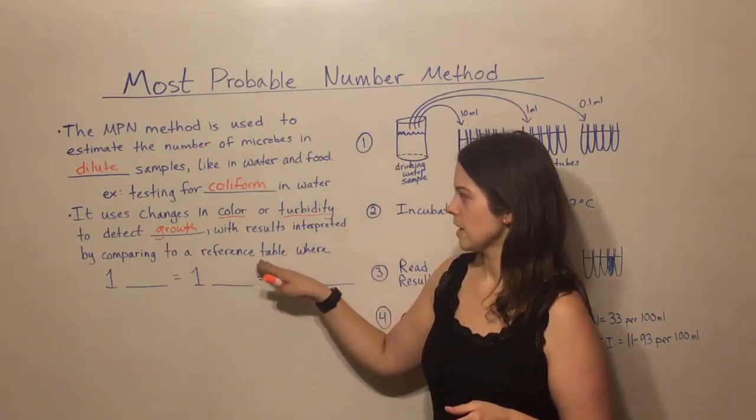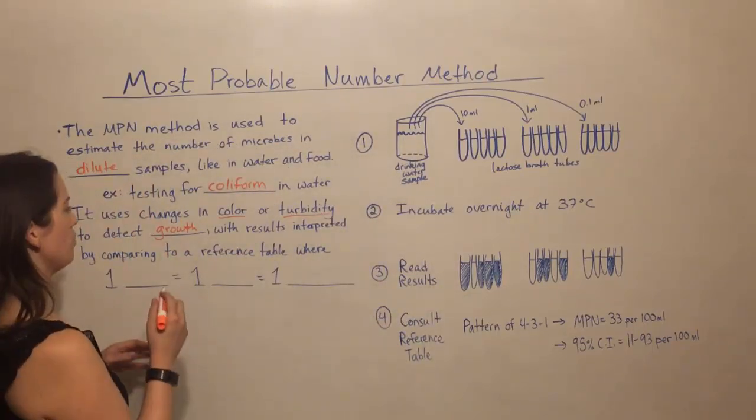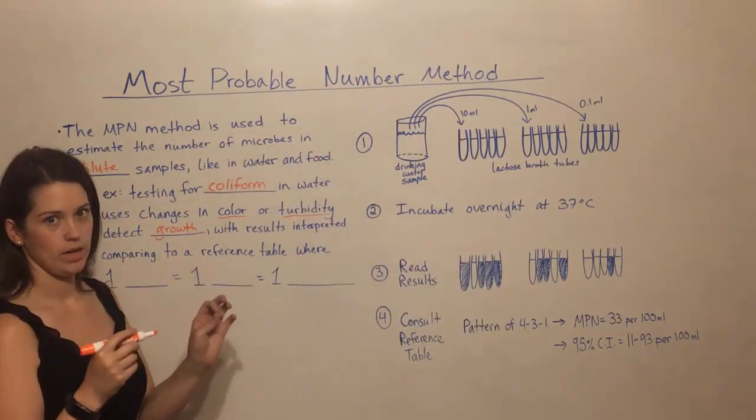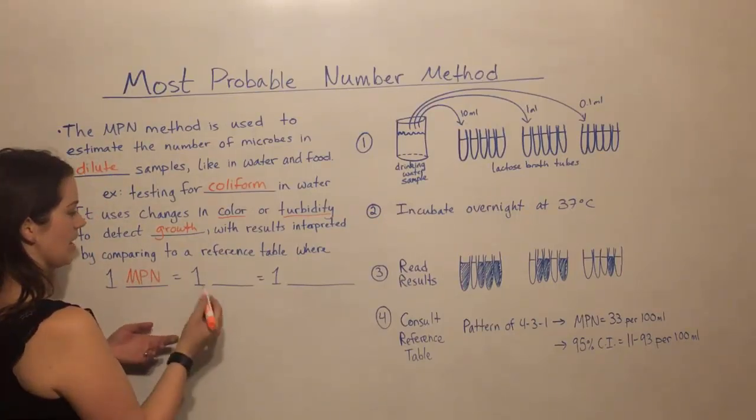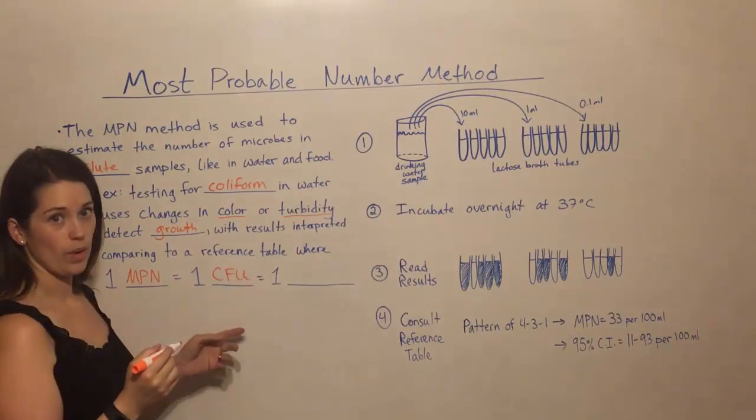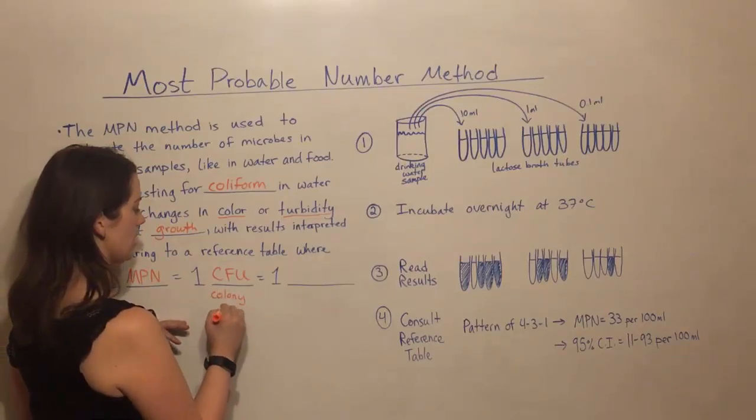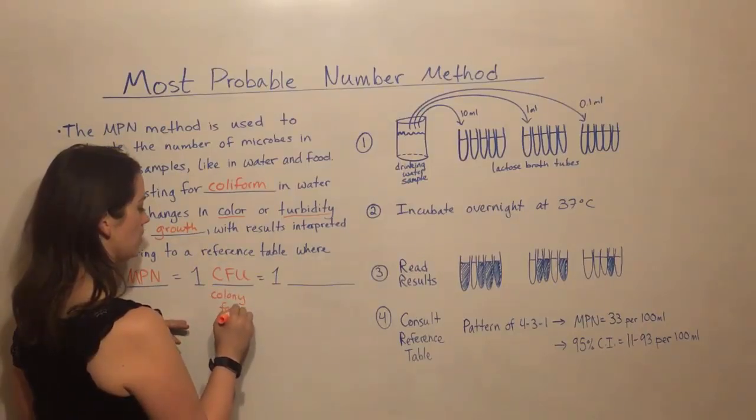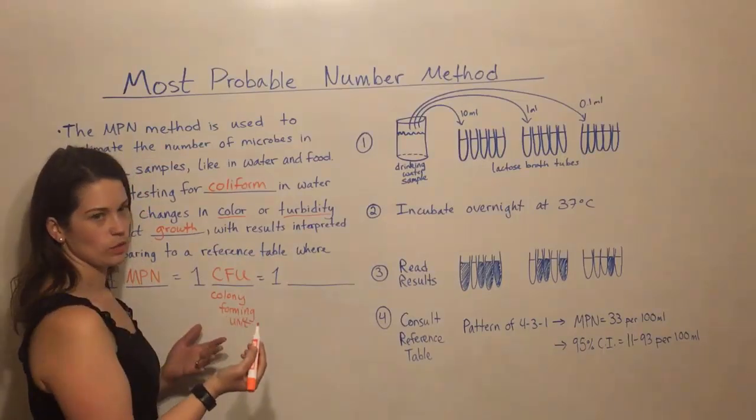When you're using the standard reference table, it's important that you realize the reference table will give you a number, a most probable number, an MPN. And an MPN is equal to one CFU. CFU is a common way of referring to bacteria and it stands for colony forming unit. And basically that just means one viable cell.